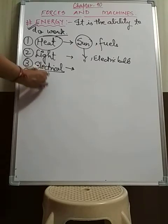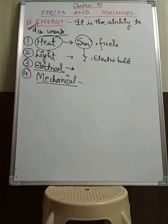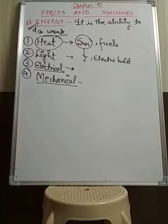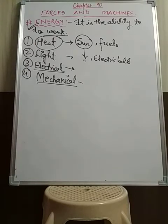The fourth type of energy is mechanical energy. Mechanical energy is the energy possessed by an object. It is of two types: one due to its position, and the other due to its movement. So mechanical energy is possessed by an object due to its position or its movement.